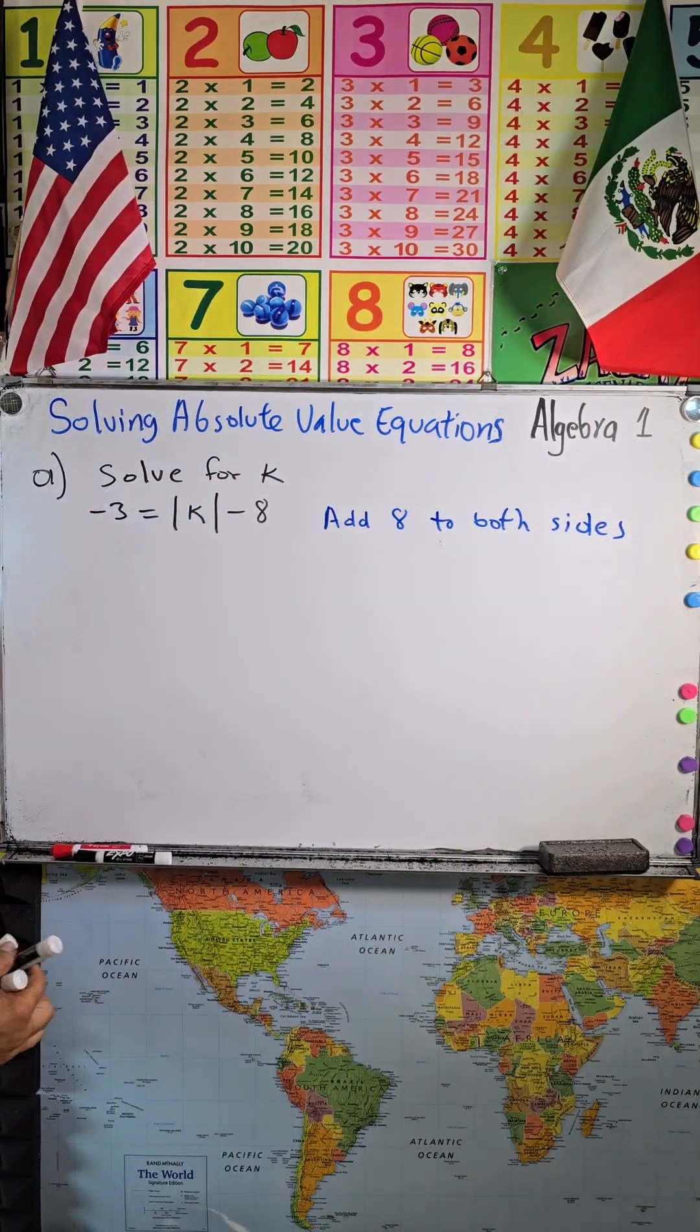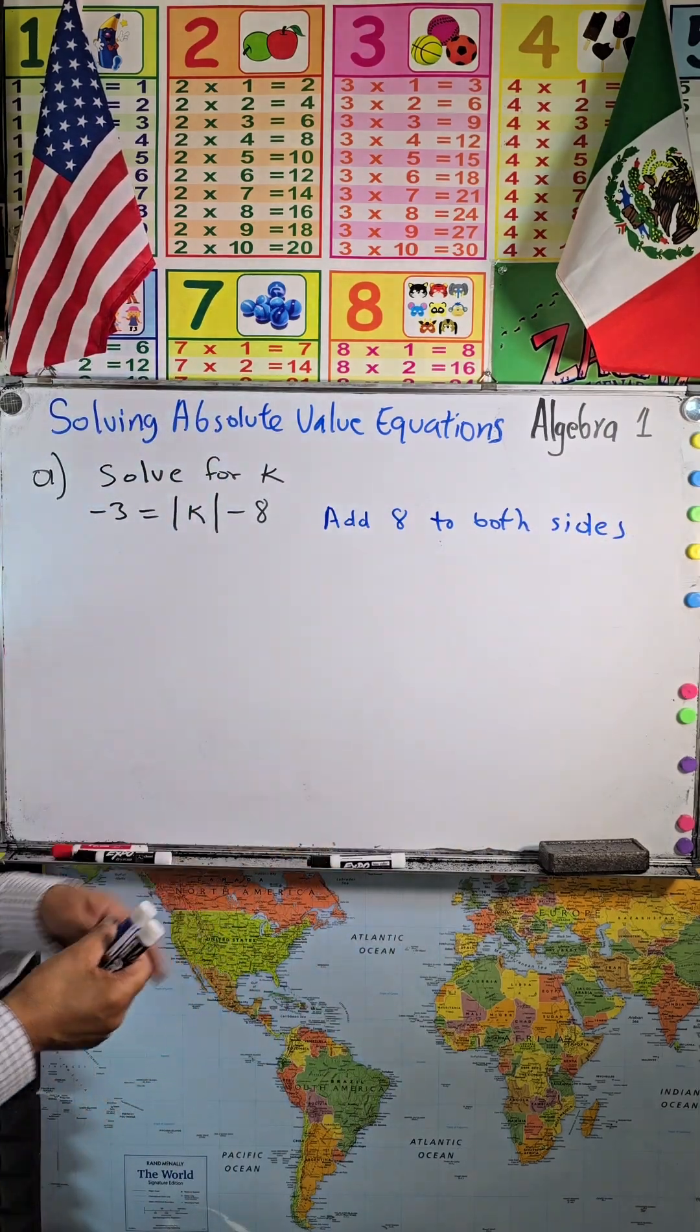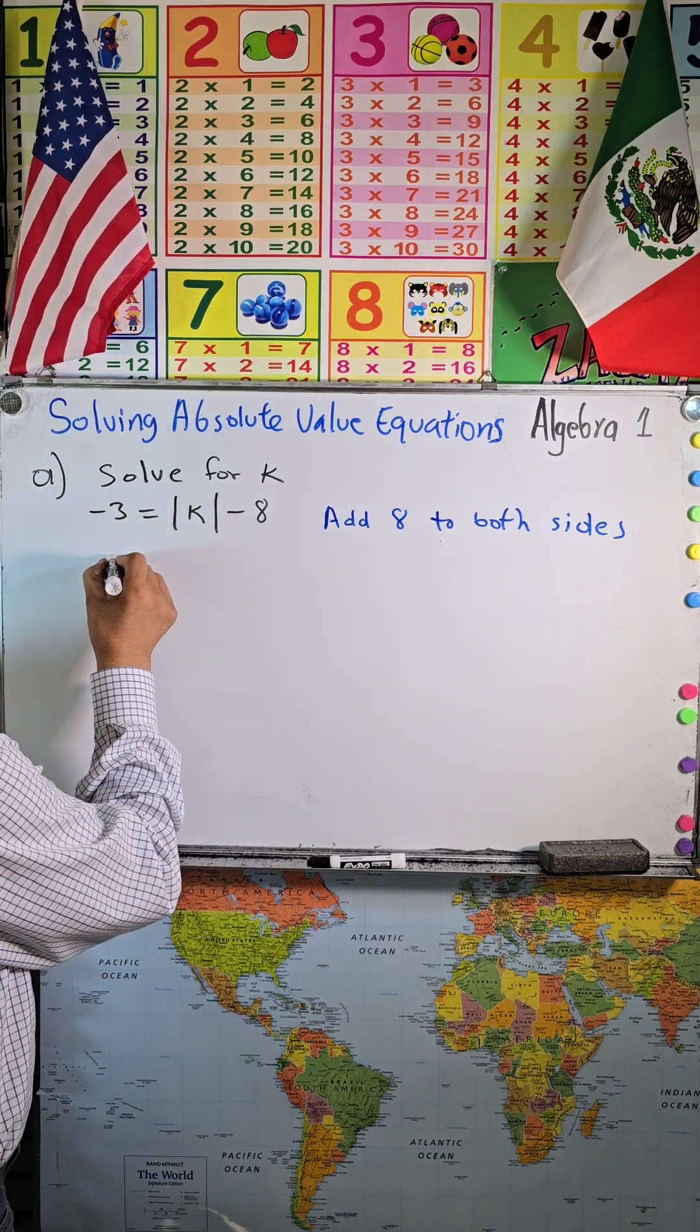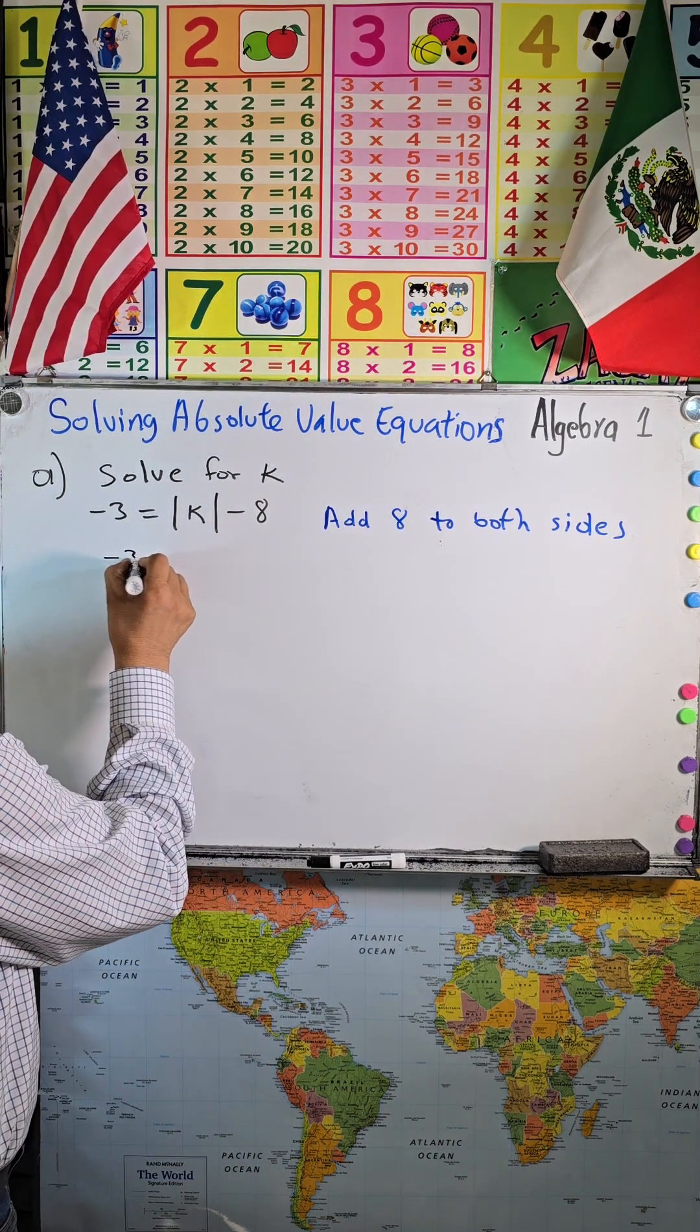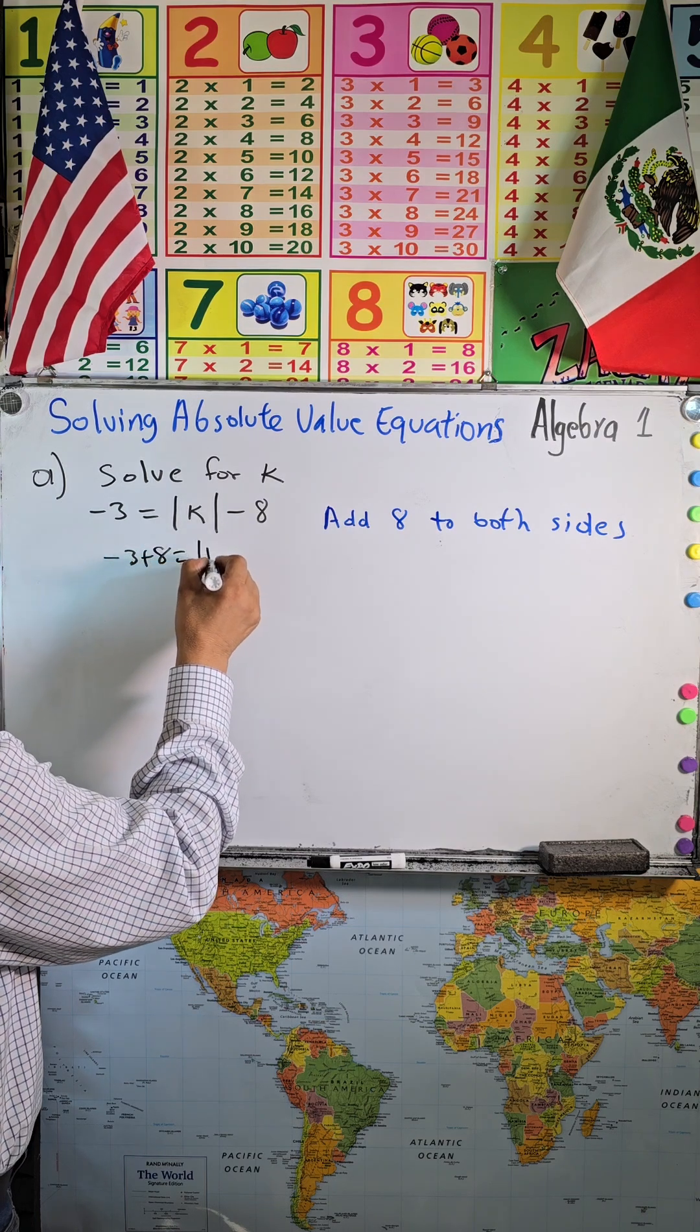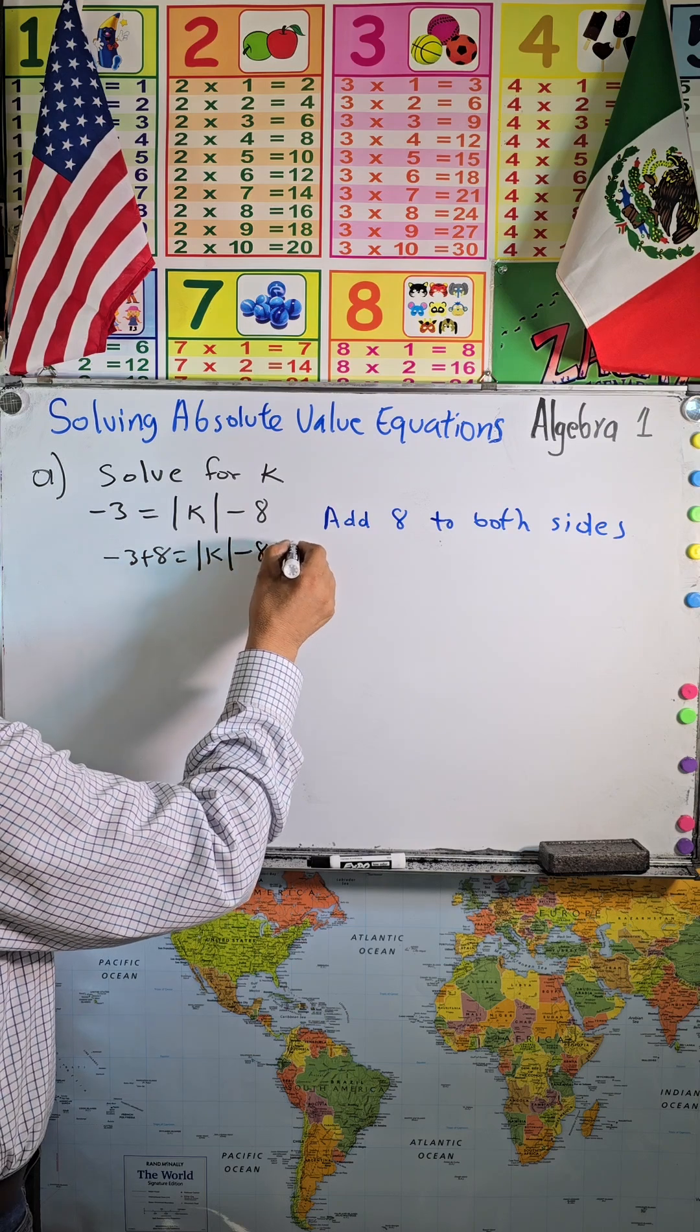When you do that, we will have negative 3 plus 8 equals absolute value of k, and minus 8 plus 8.